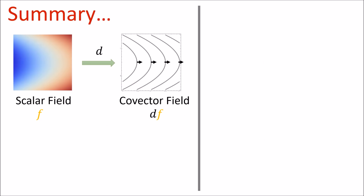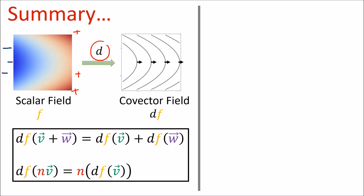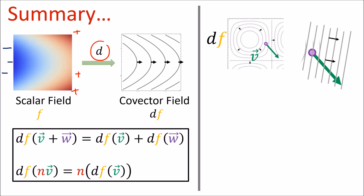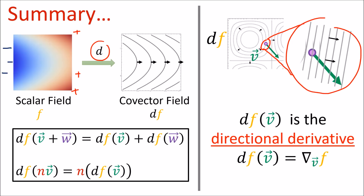In the last video we talked about how the d operator takes a scalar field and produces a covector field by tracing out the level set curves of constant value and orienting the curves toward the positive scalar direction. We also saw that covector fields, which are also called differential forms, obey linearity laws. We also saw how to compute the result of a covector field acting on a vector at a point by counting how many covector lines that the vector pierces. And finally, the geometrical interpretation of df is the directional derivative of the function f moving through a point with velocity vector v.